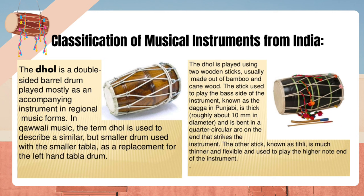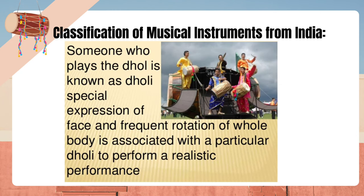The dhal is played using two wooden sticks, usually made of bamboo and cane wood. The stick used to play the bass side, known as the daga in Punjabi, is thick — roughly about 10mm in diameter — and bent in a quarter-circular arc on the end that strikes the instrument. The other stick, known as tili, is much thinner and flexible and used to play the higher note end. Someone who plays the dhal is known as toli. Special expression of face and frequent rotation of the whole body is associated with a toli performer.